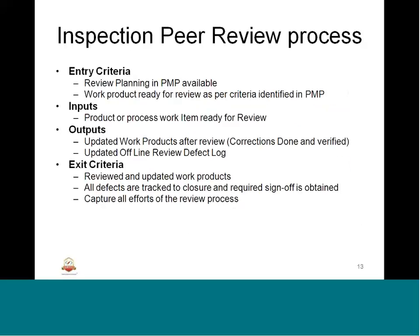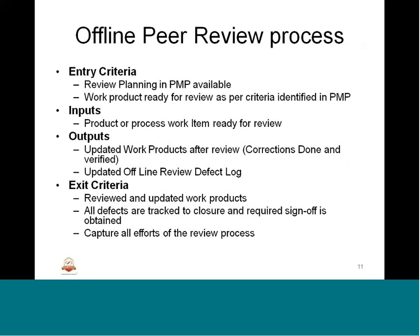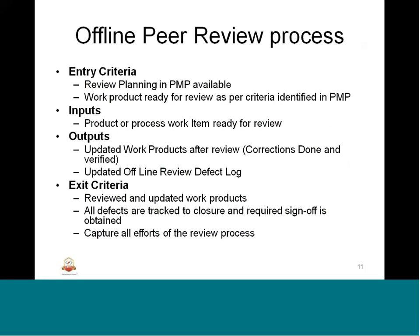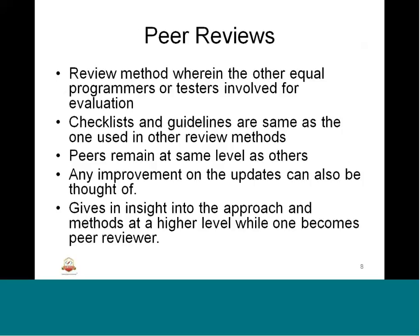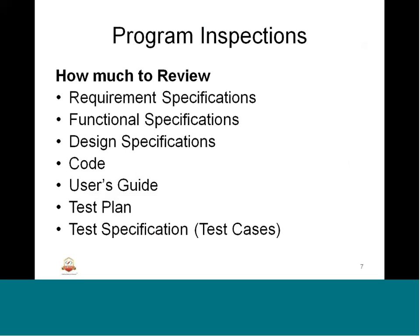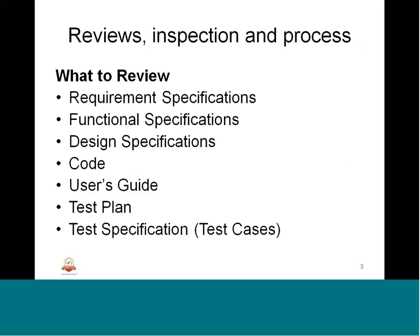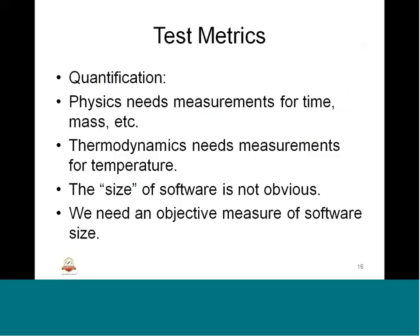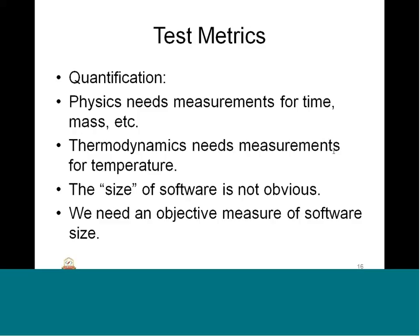That is the end of the review process, covering static analysis aspects including peer review and coding standards from the last and today's sessions. The next type of static analysis is test metrics — how we are going to produce the test metrics, what test metrics are used for embedded software testing, and how they are going to be used in terms of static analysis.